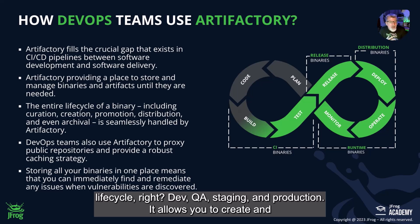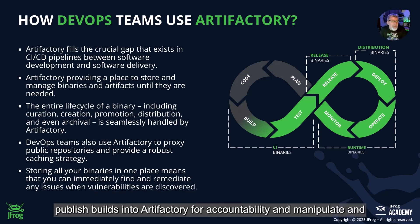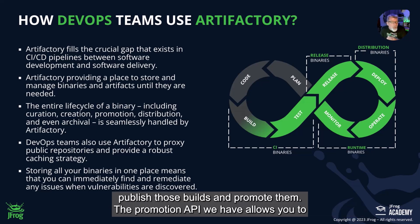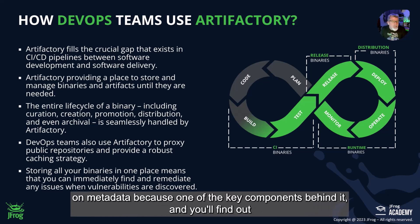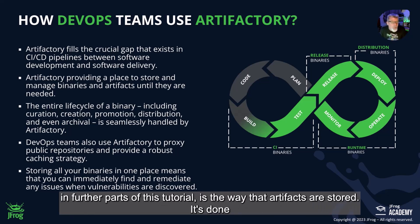It allows you to create and publish builds into Artifactory for accountability, and to promote them. The promotion API allows you to promote builds from dev to QA, to staging, and beyond. It's all accumulated based on metadata, which is one of the key components you'll learn more about in further parts of this tutorial.